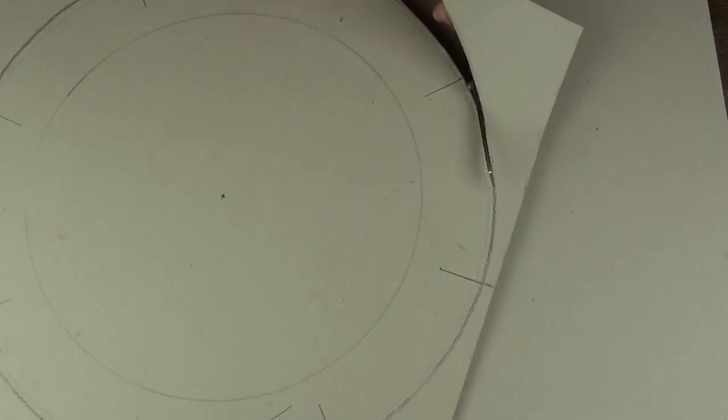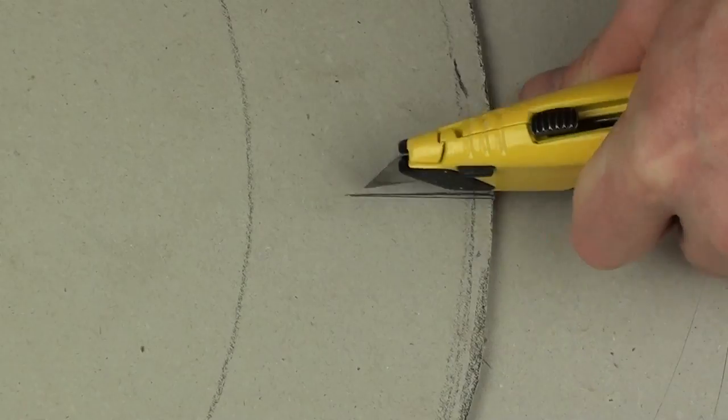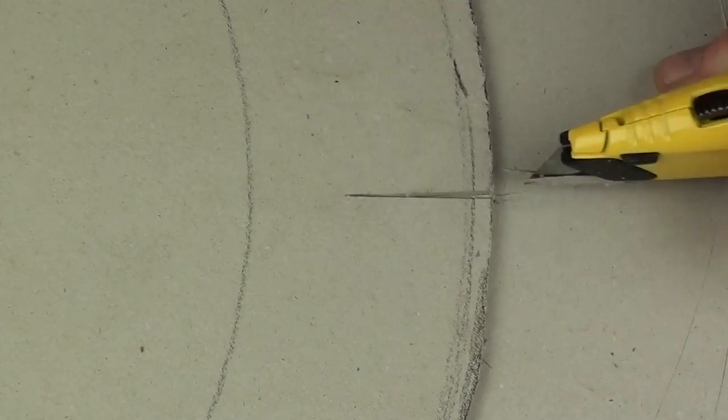Now it's time to liberate the shield from the cardboard, and then cut out those little wedges where you've just drawn those 4cm lines.